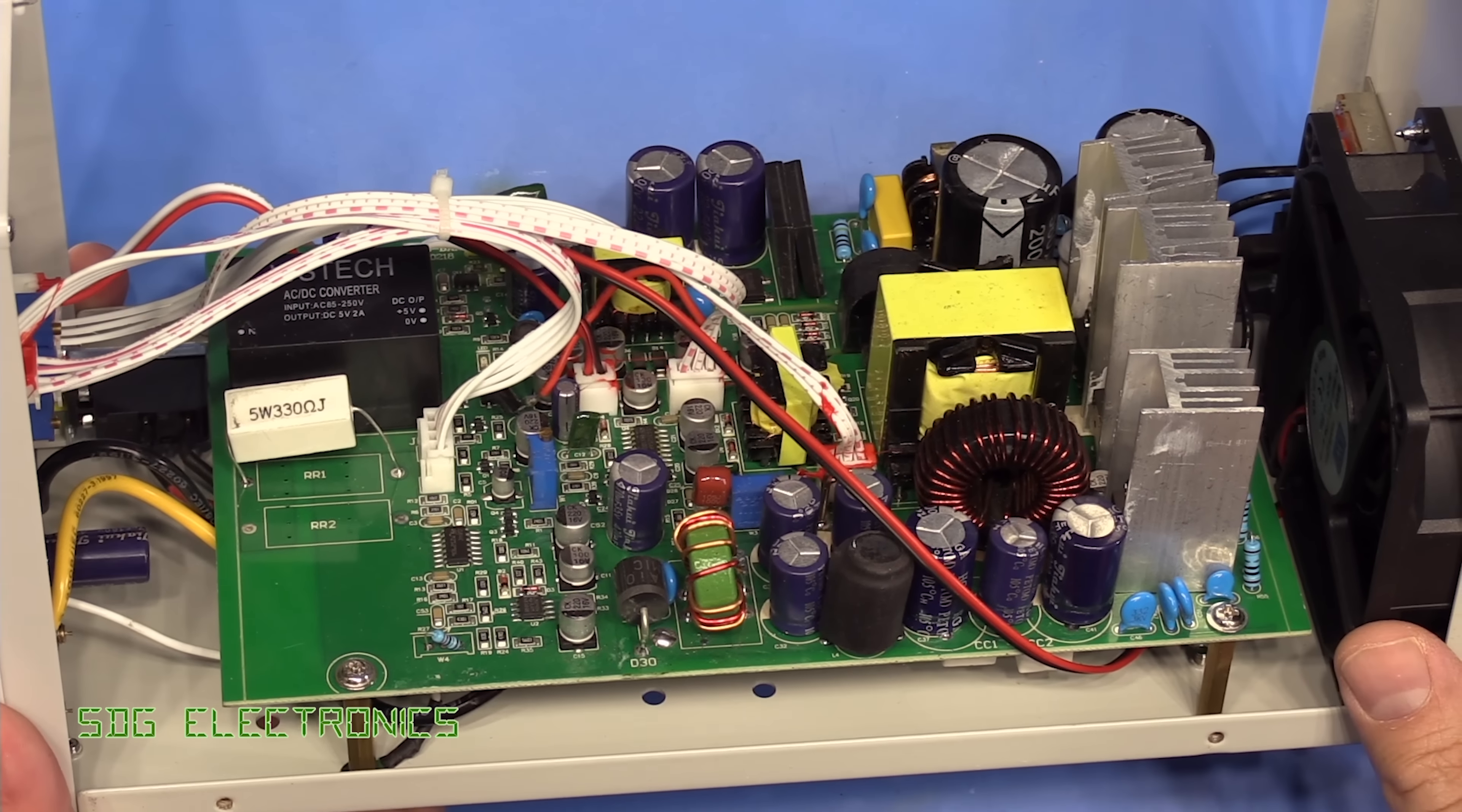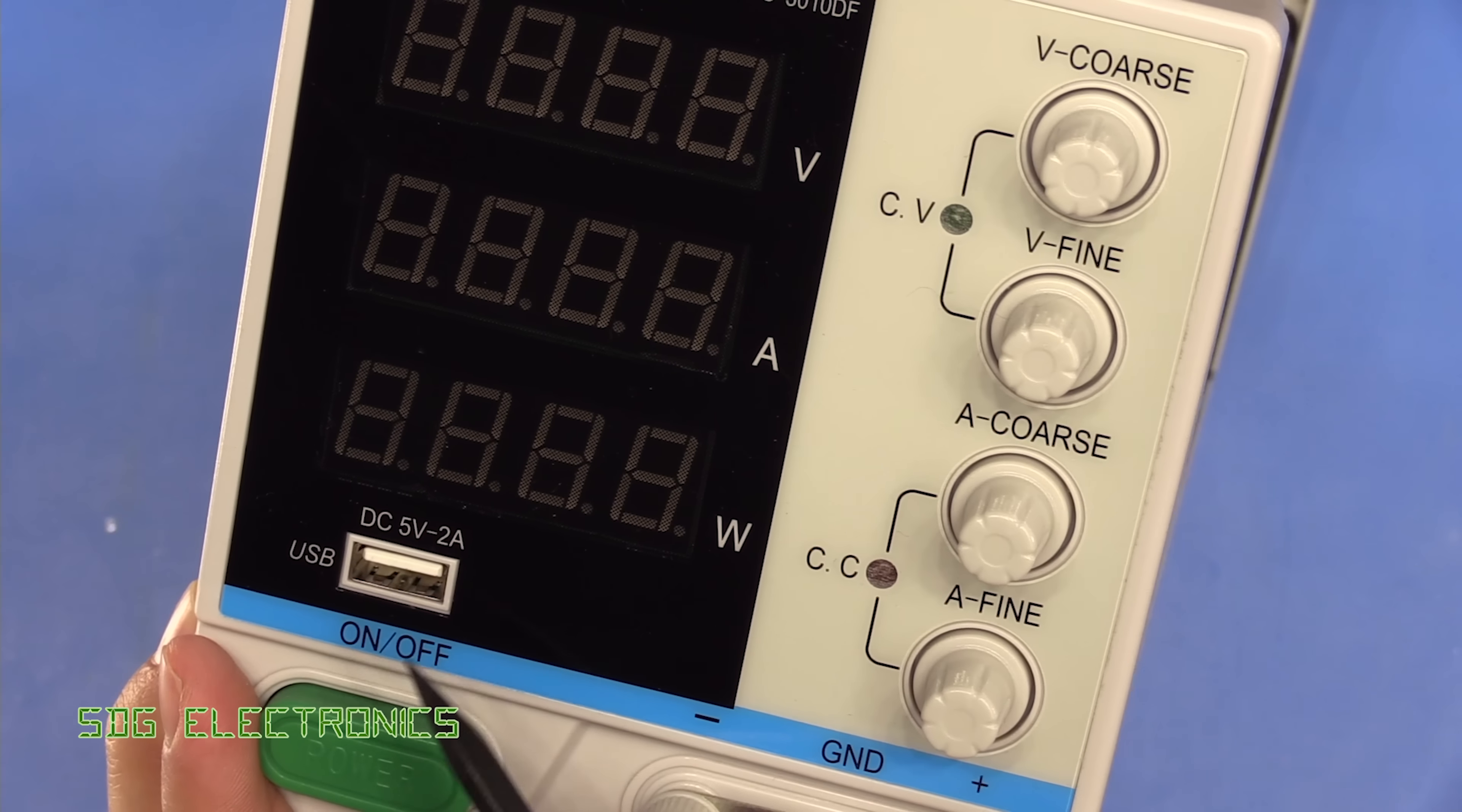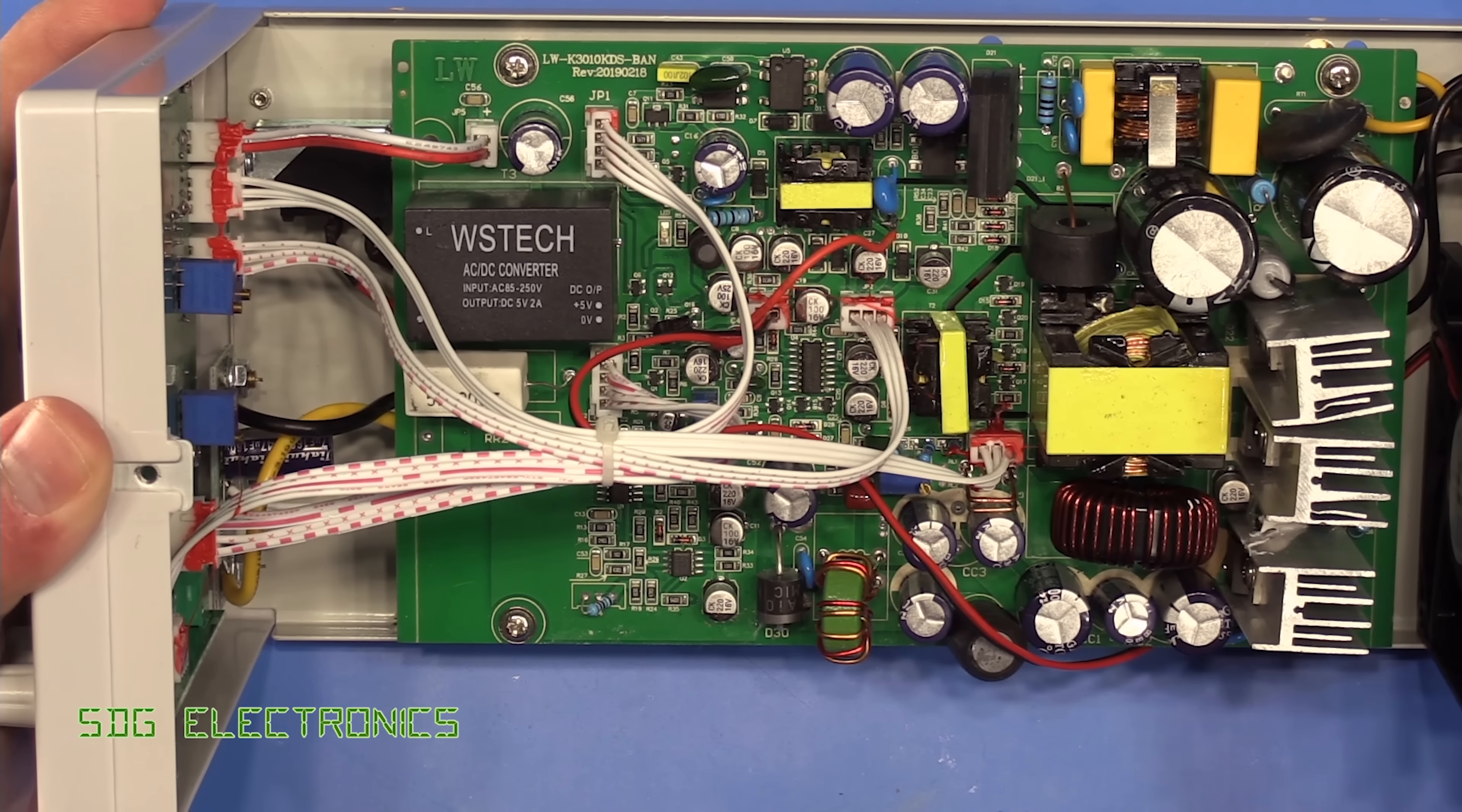So what does your money get you? Well, pretty much what you'd expect for the money. The first thing is, I forgot to mention that it has a USB connector on the front for charging your items or for plugging in stuff like a Raspberry Pi or whatever. That does actually have a dedicated AC to DC converter, which is powering that USB connector. So that is completely unrelated to the rest of the electronics on here.